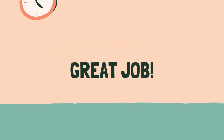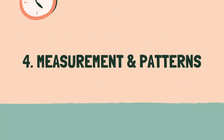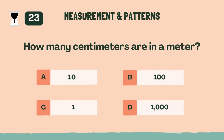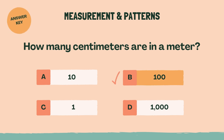Great job. Ready for some measurement and patterns? Category 4: Measurement and Patterns. How many centimeters are in a meter? The answer is B, 100.